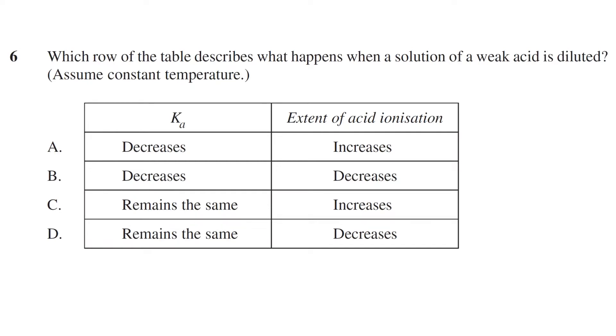Specifically, the question asks what happens to the Ka value and the extent of acid ionization. The table gives a number of options, but in summary,